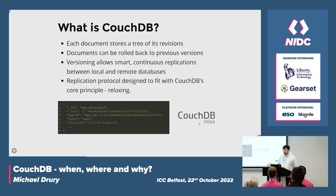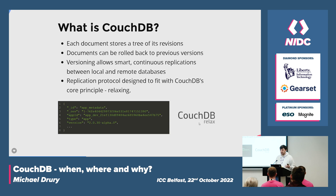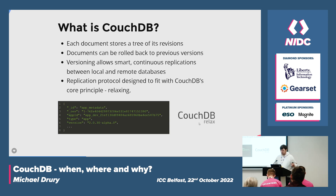Each document in CouchDB stores a tree of its revisions. We don't just write a JSON blob to disk; we store a tree of everything that's happened to that document — essentially like Git. The documents can be rolled back to previous versions using the revision that comes with the document, and that can be done between local and remote databases in the cluster.